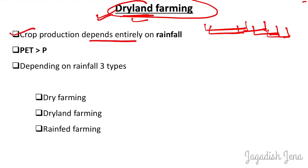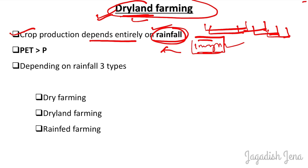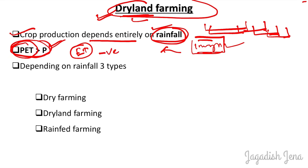In dryland farming, crop production depends entirely on rainfall and there is no irrigation facility. Dryland agriculture refers to those agricultural practices where potential evapotranspiration is generally greater than precipitation. Potential evapotranspiration is the maximum evapotranspiration from a particular area. Because it is more than precipitation, there is a negative water balance present in the dryland farming situation.